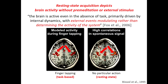How did we actually get there? You have here an example of the pioneering work done by Biswal in 1995, explaining that resting state acquisition depicts brain activity without premeditation or external stimulus. Fox illustratively said that the brain is active even in the absence of a task, primarily driven by internal dynamics, with external events modulating rather than determining the activity of the system.